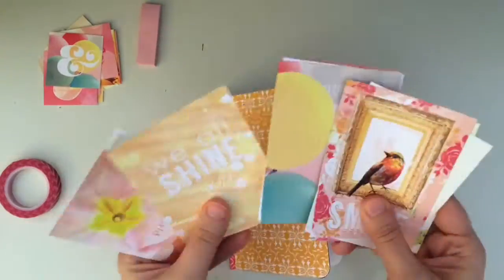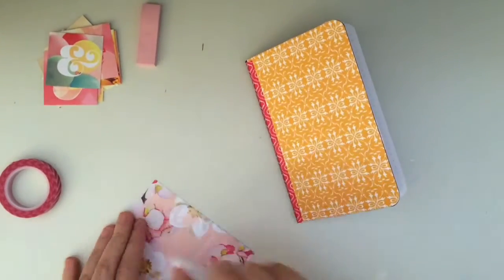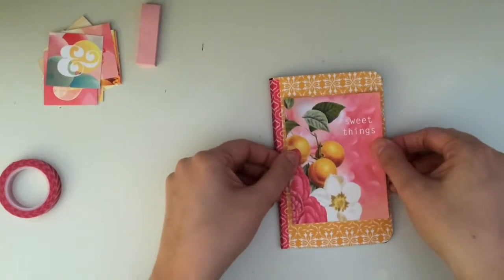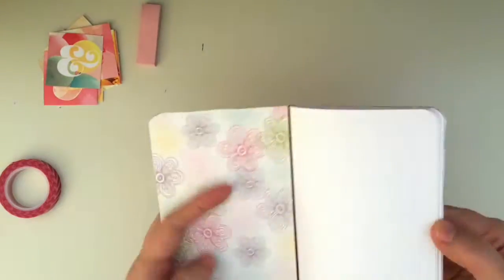So I want to add something else to the cover. So I grabbed one of these scrapbooking cards that I think is really pretty, and I just adhered it to the cover. So it says sweet things, which I think is appropriate for a gratitude journal.